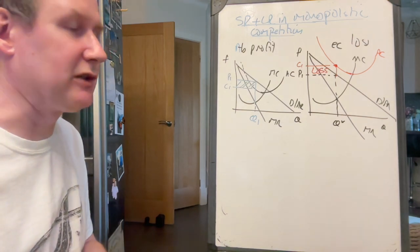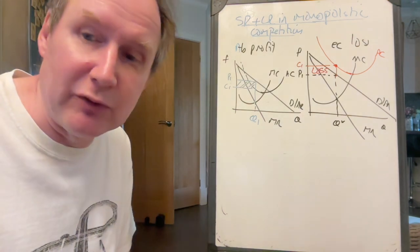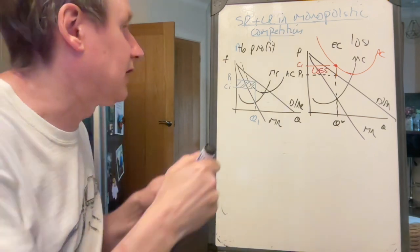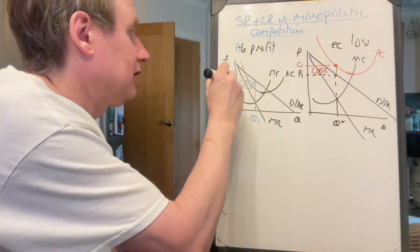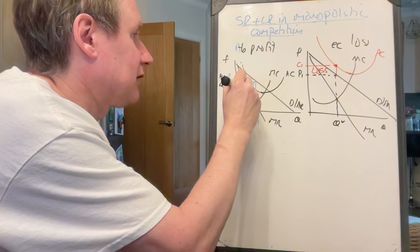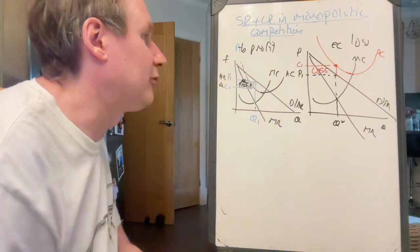Because cost is greater than price, cost is greater than average revenue. Average cost is greater than average revenue, whereas here, average revenue is greater than average cost, so that firm has abnormal profit.